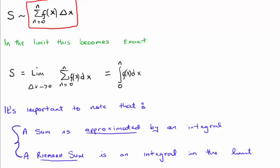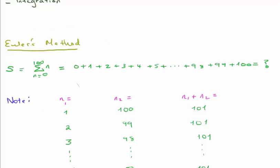It is important to note that a sum is only approximated by an integral, but a Riemann sum is an integral in the limit. So going back, the problem we have is to calculate the sum of the first 100 integers, which I've written in this format here.